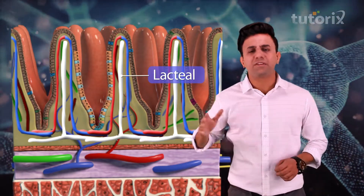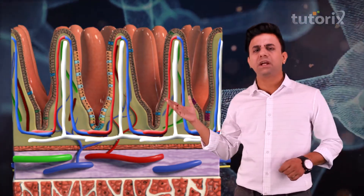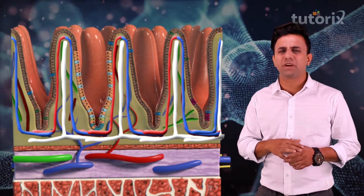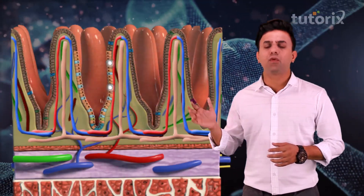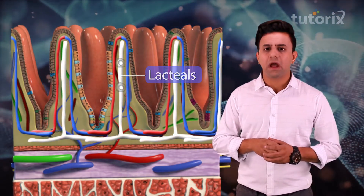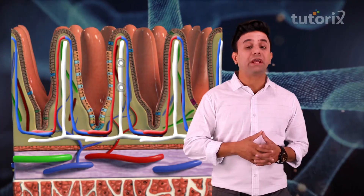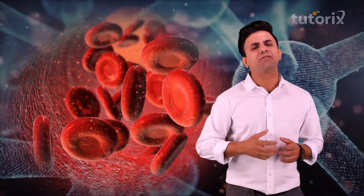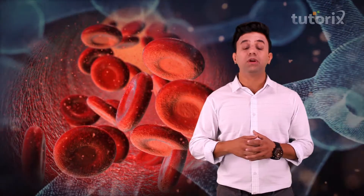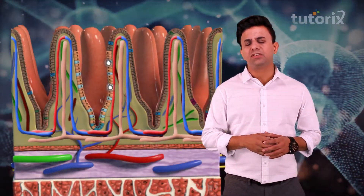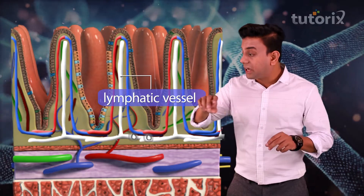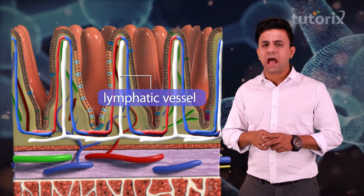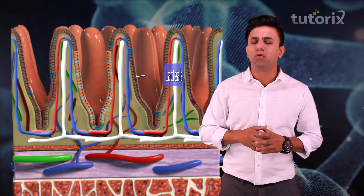These lymph vessels — lacteals — and villi were discussed in the previous sessions. These chylomicrons are big fat molecules which are white in color. So when these chylomicrons enter the lymphatic vessel of the villi, this imparts the entire lymphatic vessel a milky white appearance, and this is the reason why these lymphatic vessels of the villi are known as lacteals.